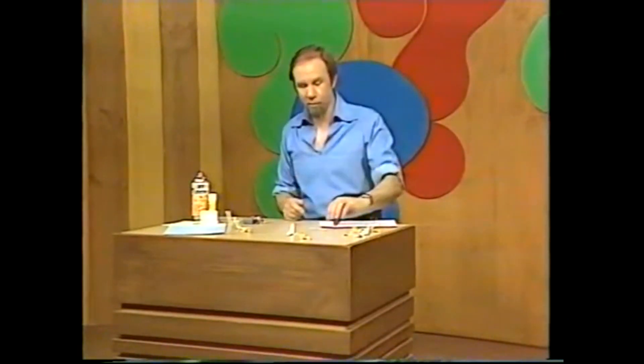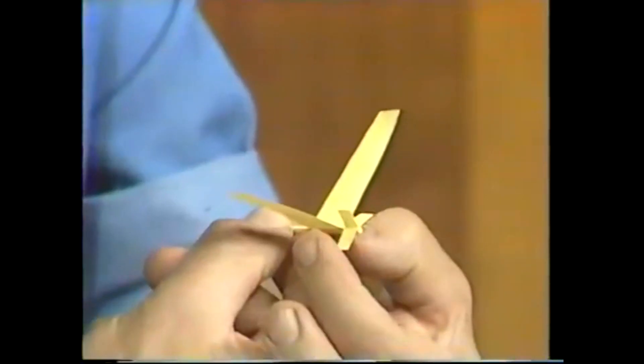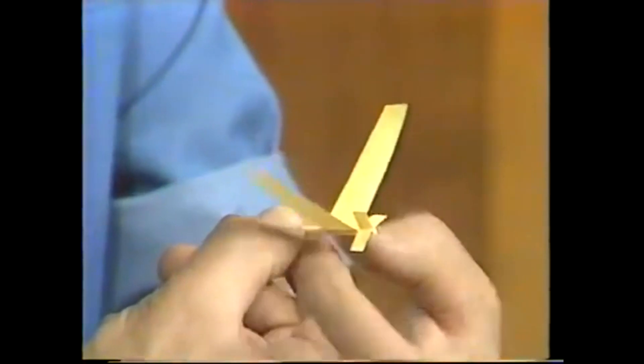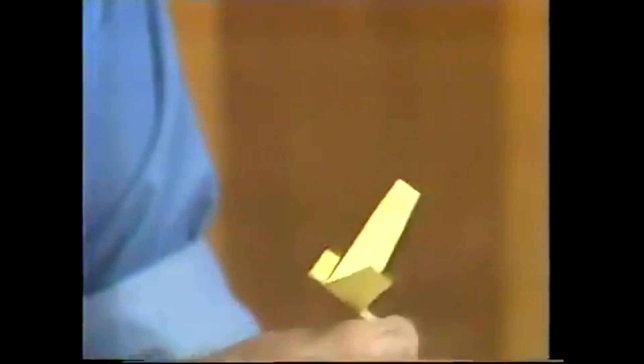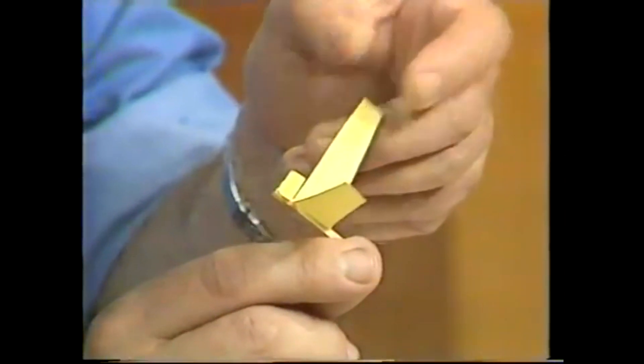So these are the things you probably want to change. First of all, fold the wings upwards so they make a V. That gives it stability. Secondly, if it tends to plummet a lot, fold the back of the wings up. Airplanes really do have controls like this. They're called flaps.